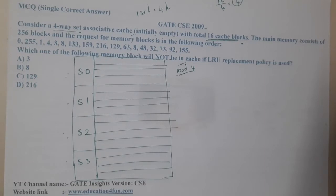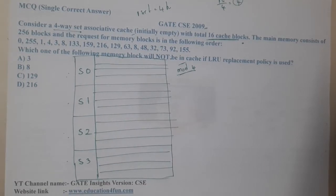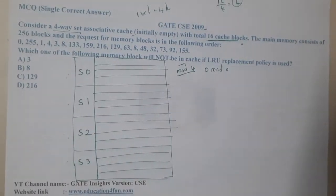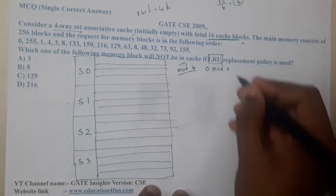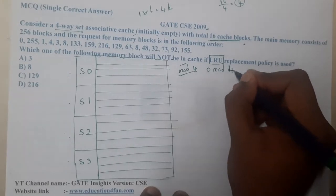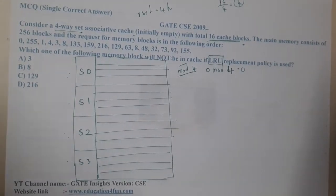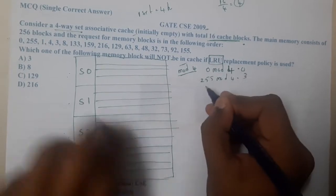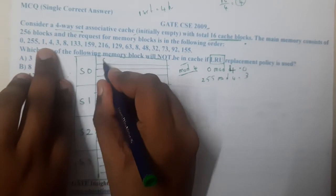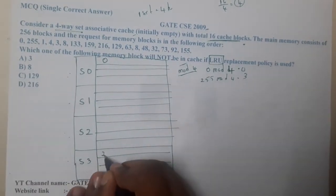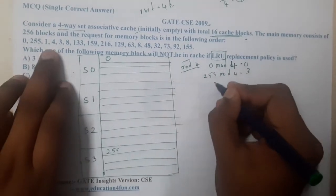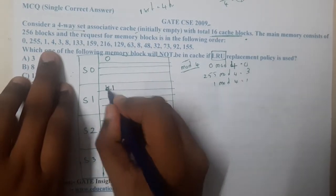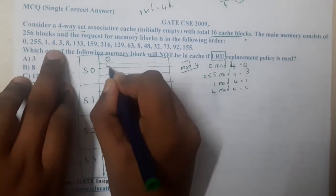Let us start. They clearly mentioned in the question that they are using LRU. What is 0 mod 4? It is 0. Similarly, 255 mod 4 is 3. Let us fill parallelly. Here you will get 0 in the first place, you will get 255. As the slots are completely empty, there is no restrictions. What is 1 mod 4? That is 1, so here you will get 1. Similarly, 4 mod 4 which is 0, so here you will get 4. 3 mod 4 you will get 3, so 3 will come here. Similarly, 8 mod 4 is 0, so 8 will come here.